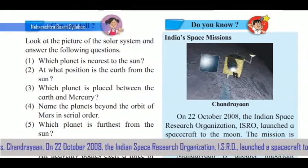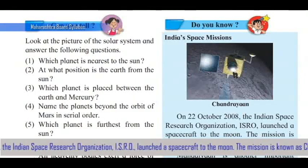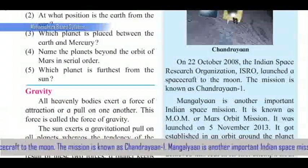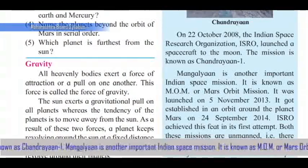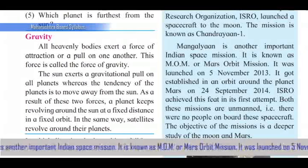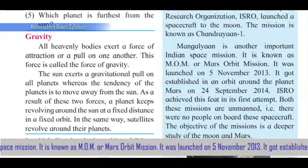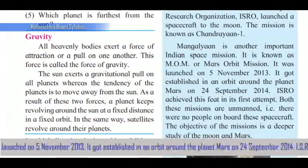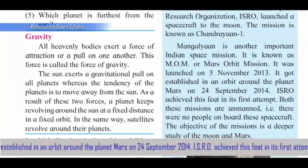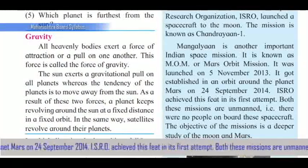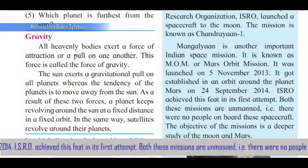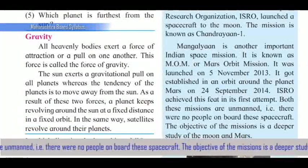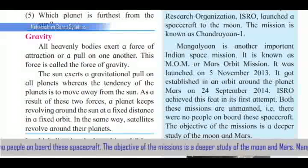India's space missions: On 22nd October 2008, the Indian Space Research Organization launched a spacecraft to the Moon. The mission is known as Chandrayaan-1. Mangalyaan is another important Indian space mission, also known as the Mars Orbit Mission (MOM). It was launched on 5th November 2013 and was established in an orbit around the planet Mars on 24th September 2014. ISRO achieved this feat in its very first attempt.